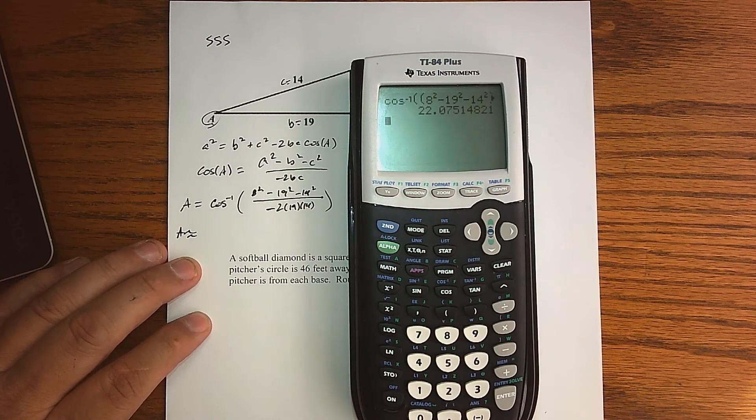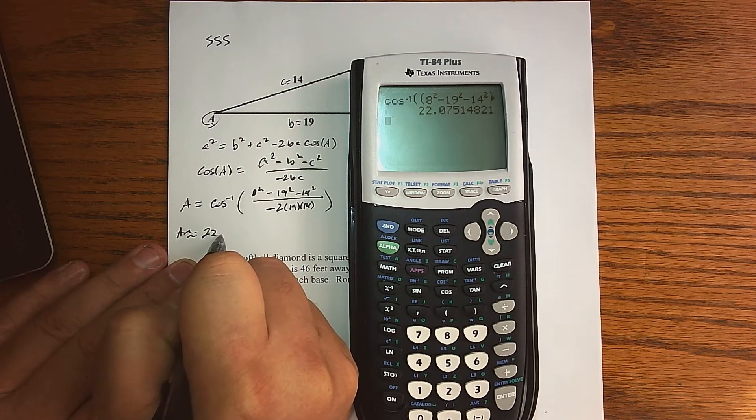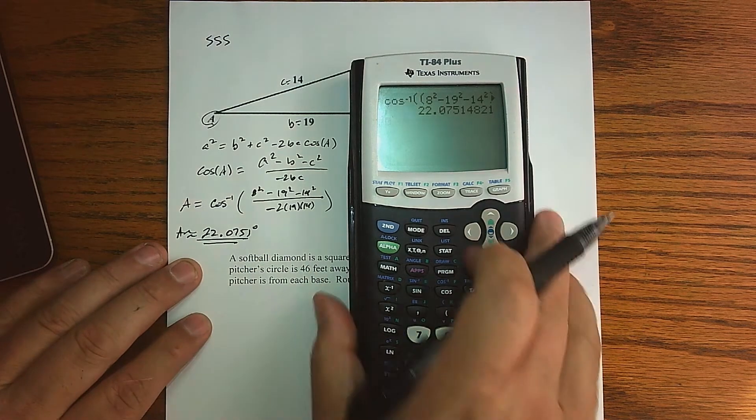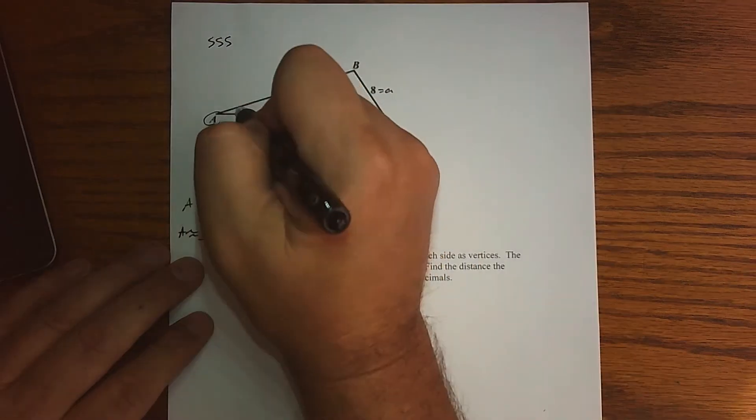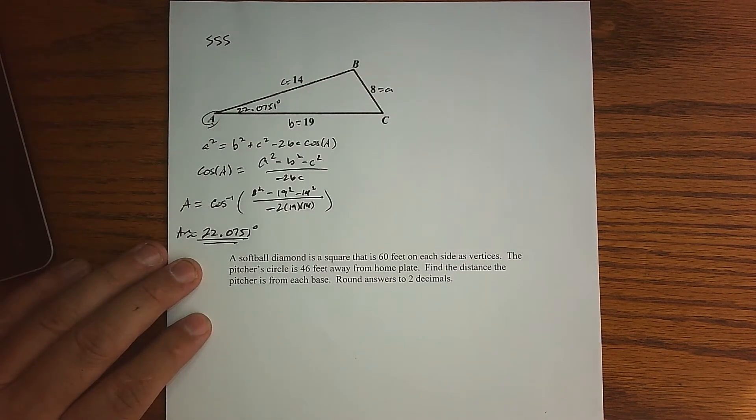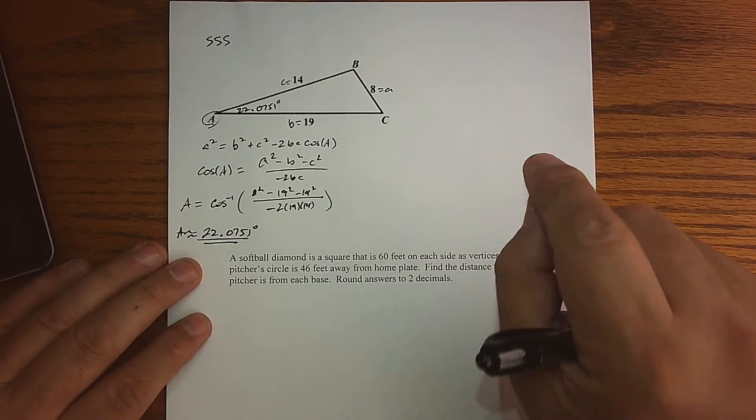So pressing enter, it looks like we get 22.0751. So there's the angle A for this situation. So this angle is 22.0751 degrees. So how do I find B or C? Well, we're going to have to use the law of cosines one more time in order to do that.